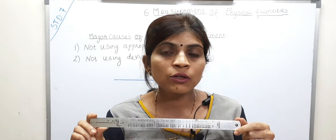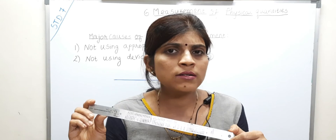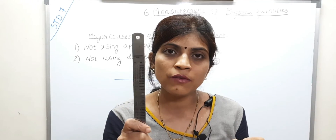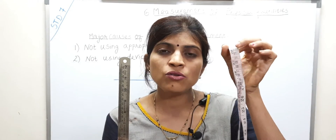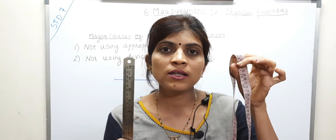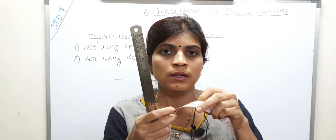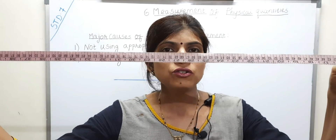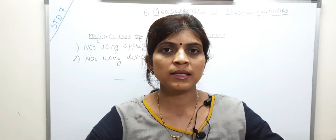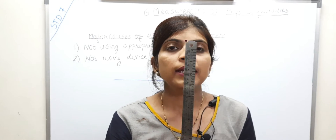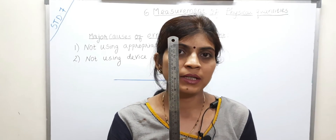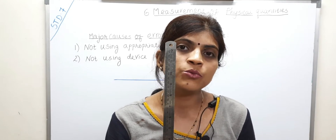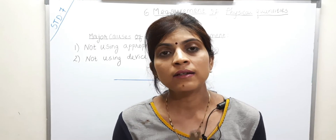Of course not. When we use inappropriate — meaning not suitable — devices, errors occur. The measuring tape is the appropriate device for measuring the curved body parts, because body parts are usually curved. But if the tailor uses a scale instead of the measuring tape, it becomes inappropriate. So when we don't use an appropriate device for measurement, errors will surely take place.